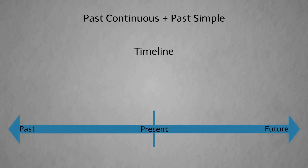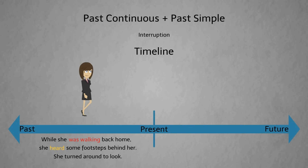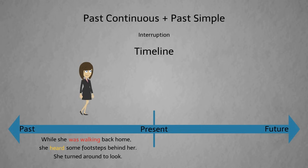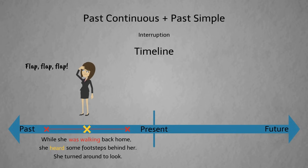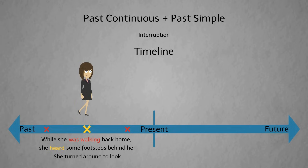Sometimes the shorter action interrupted the longer action. 'While she was walking back home, she heard some footsteps behind her. She turned around to look.' Alyssa walking back home is the longer action; hearing the footsteps is the shorter action. In this case, the footsteps interrupted her walking and made her stop to look back before she continued walking again.